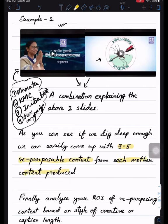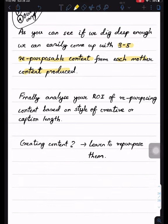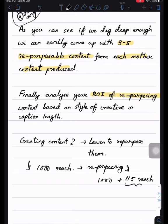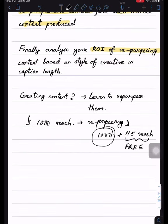Finally, I always suggest analyzing your repurposing ROI. For example, if you create content and get 1,000 reach through that mother content, then with repurposing you might get 115 reach plus the original 1,000—this additional reach is free. The more repurposed content you create, the more this number grows exponentially.